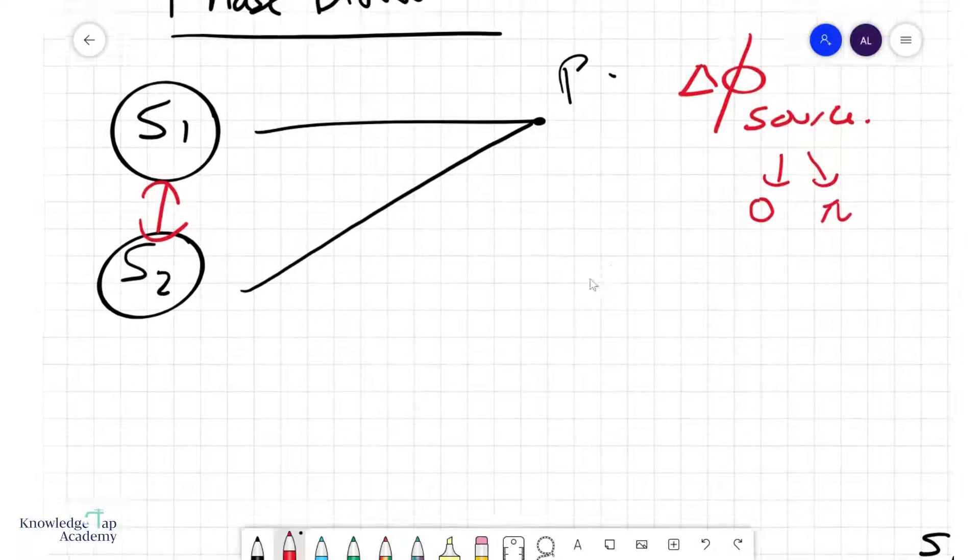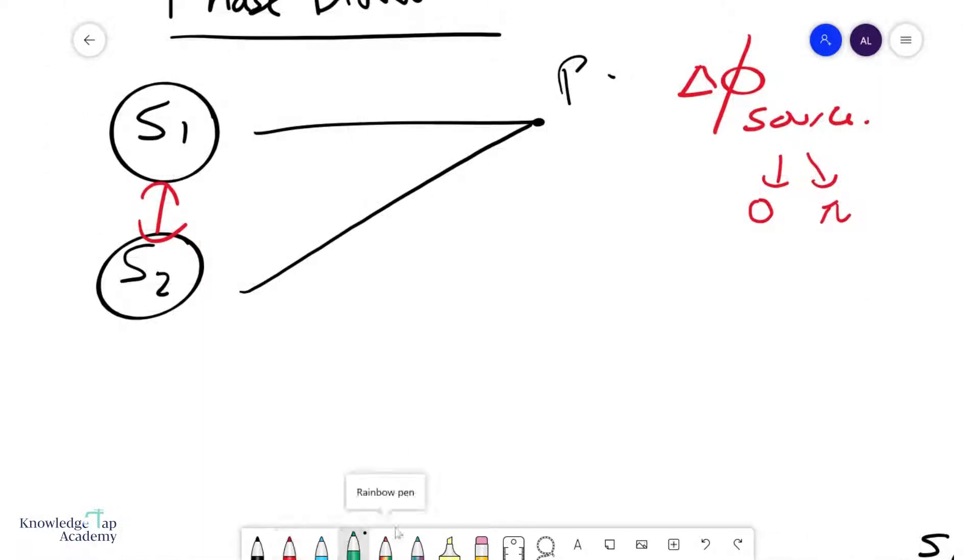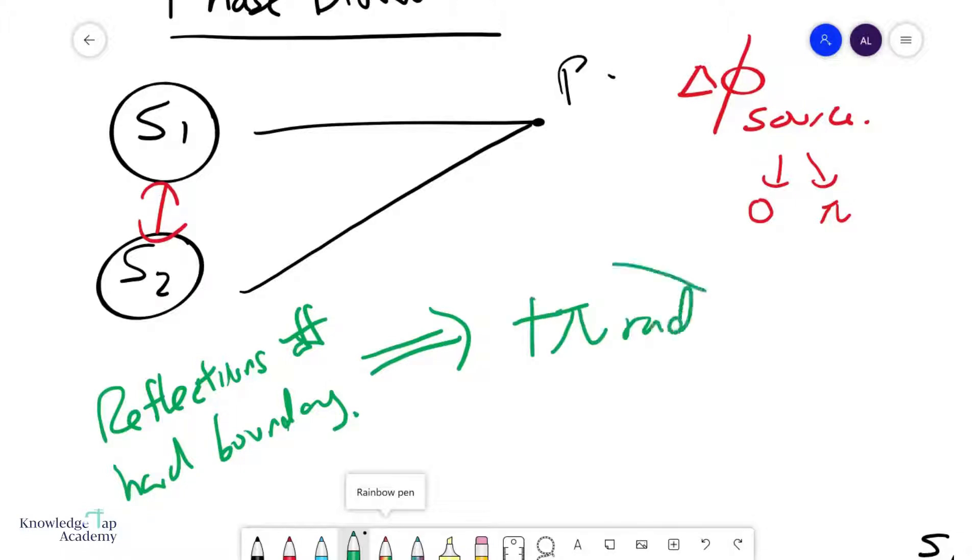The second thing is basically how many reflections of hard boundaries that your waves may take. So the idea is very simple. Every time you reflect off a hard boundary, you will introduce a phase difference of π radians.